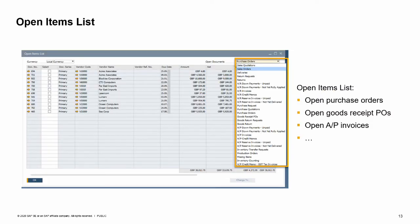The open items list is an excellent report for monitoring and managing open marketing documents, such as open purchase orders, open goods receipt POs, and so on. Just choose the type of document you would like to view. You can choose not only open purchasing and sales documents, but also open production orders, inventory transfer requests, and inventory counting documents.